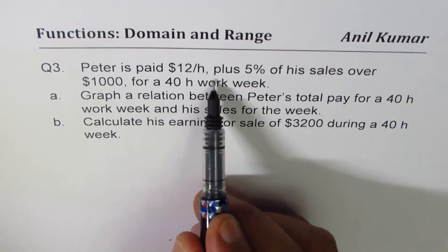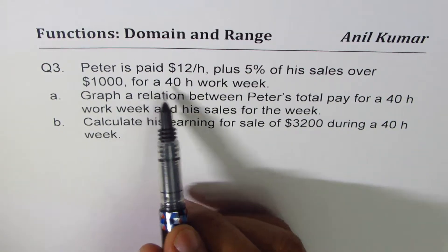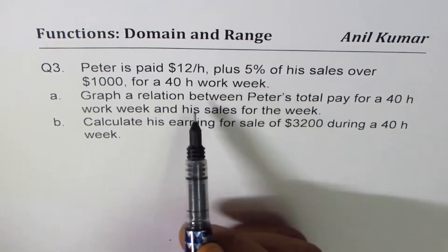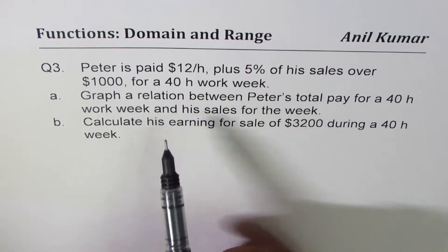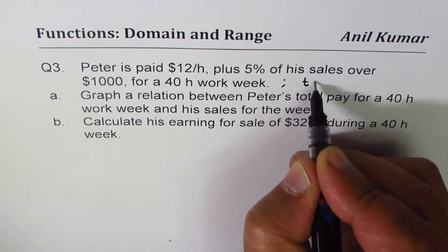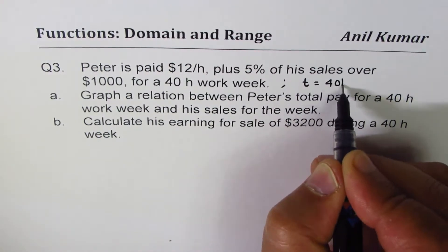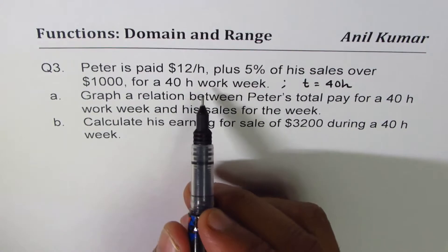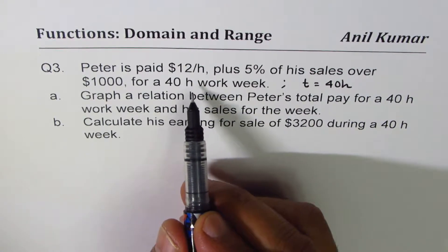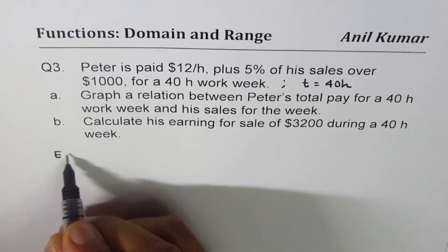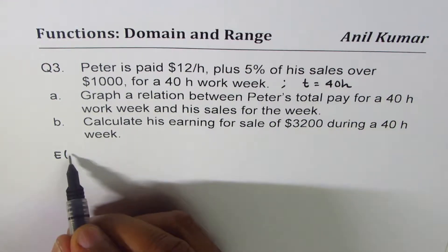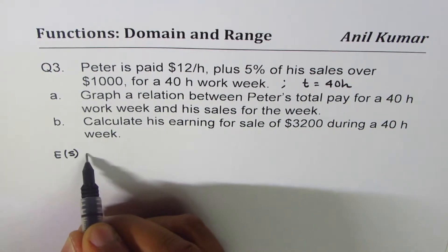So in this question, time 40 hours is fixed, right? So we are saying time is 40 hours. The earnings could be written as: earnings E as a function of sales is equal to...